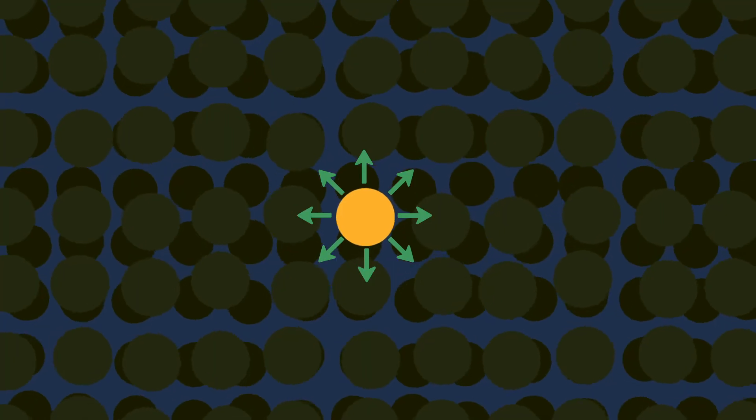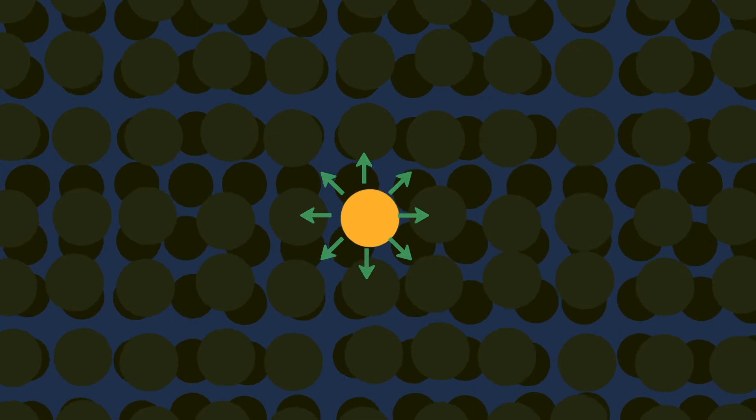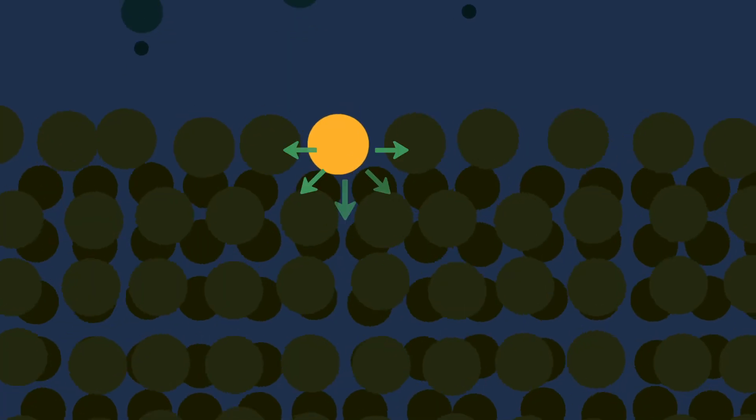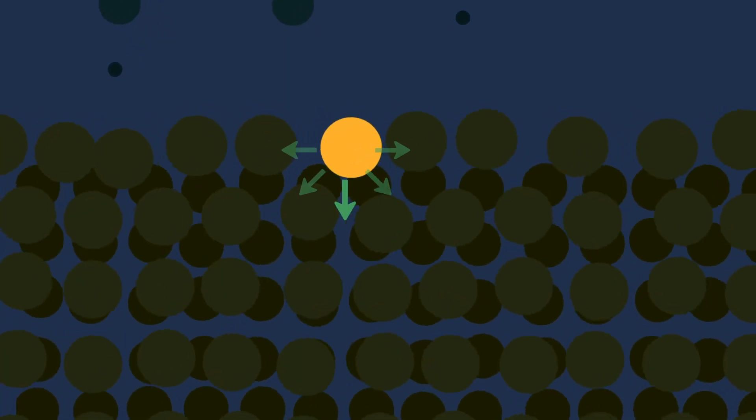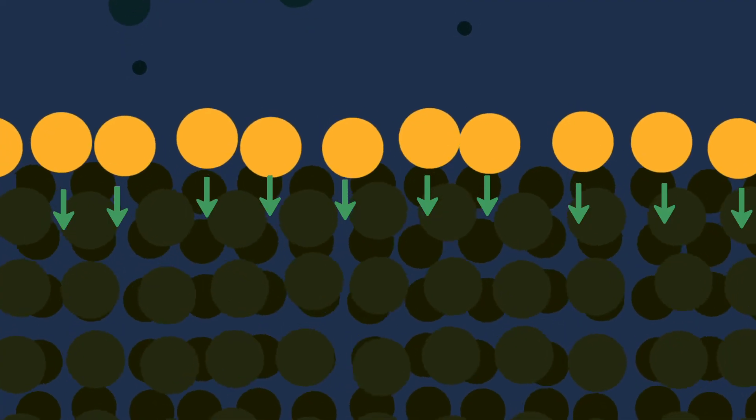Indeed, within a material, atoms or molecules are attracted to all their neighbours, so that the net resultant force they experience is zero. In contrast, at an interface, the situation is not symmetric, and there is a net force pulling atoms or molecules towards the centre of the material.